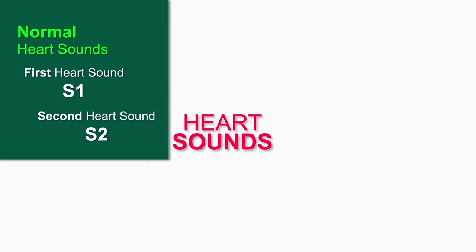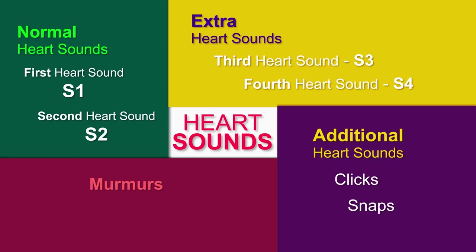To make things simple, we will categorize heart sounds into four categories: normal, extra, additional heart sounds, and murmurs. Normal heart sounds include first and second heart sounds, S1 and S2. Extra heart sounds include S3 and S4. The third category, additional heart sounds, includes clicks and snaps. The fourth category is cardiac murmurs, which can be systolic, diastolic, or continuous.